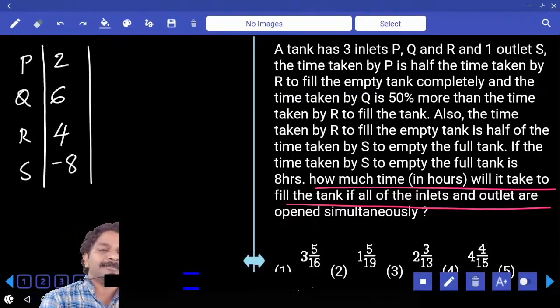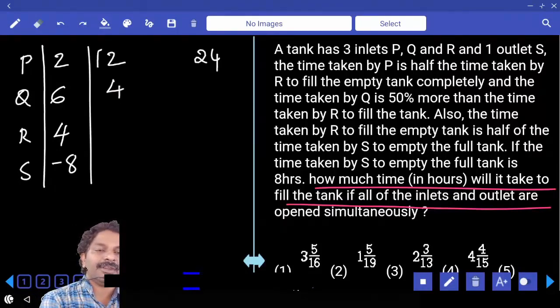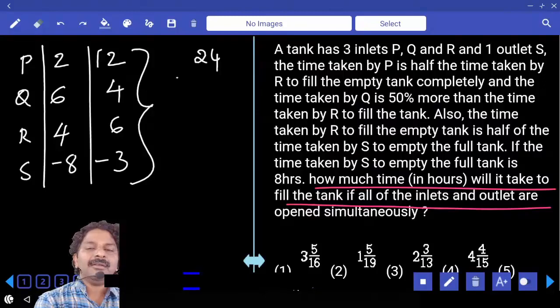What is LCM? 24. P can fill 12 units, Q 4 units, R 6, S can empty. So if all are opened, work done is 19 units only.